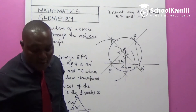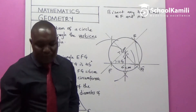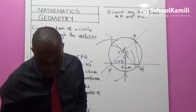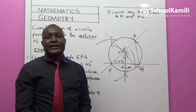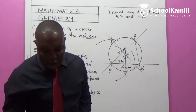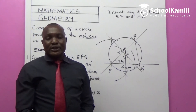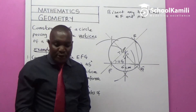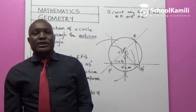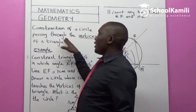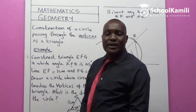What I'm leaving you with is an assignment. In your Primary Mathematics textbook, work out Exercise 51, page 72, question number 4. Try it out and I know you are going to construct good circles touching the vertices of a triangle. Thank you for joining me in today's lesson.